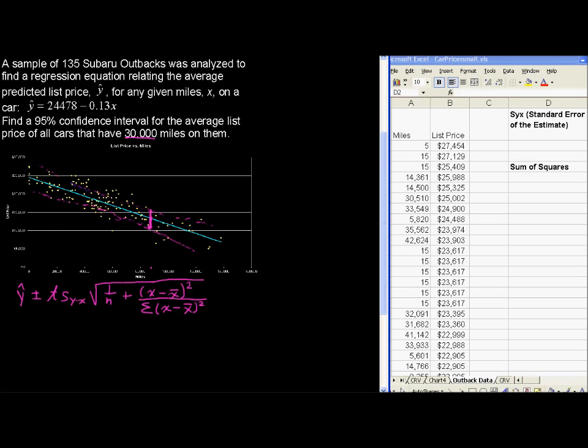So let's build this bit by bit, y hat. Y hat equals the 24,478 minus 0.13 multiplied by the 30,000. 30,000 miles is our x value in question. So y hat then gives us an estimate of about $20,000, remember this is list price, $20,578. That's our y hat, I'm going to plug it in right here, $20,578.